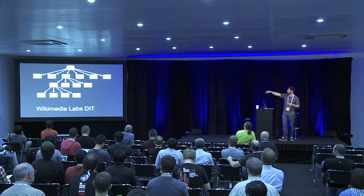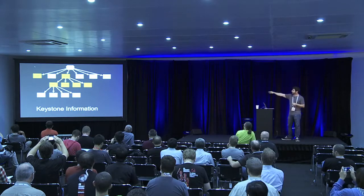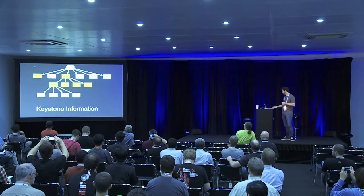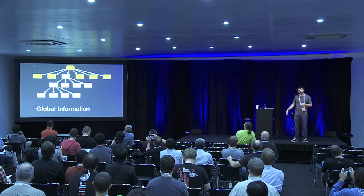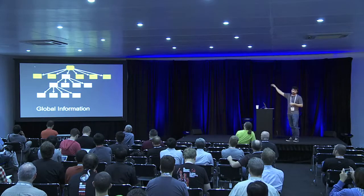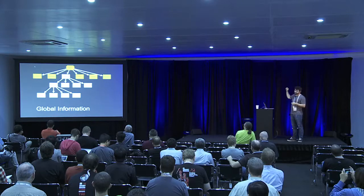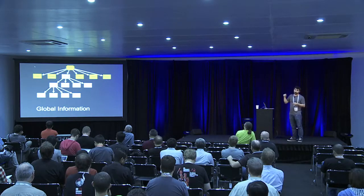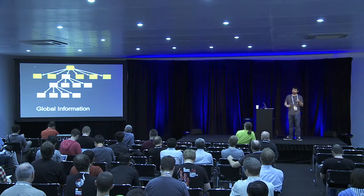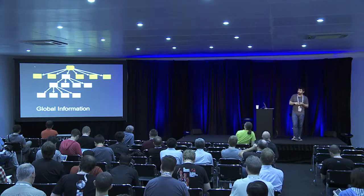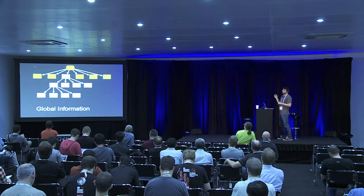This is our directory information tree. In this DIT, we have the Keystone information — that's the users and the projects. We also have a set of global information available to every single instance across every single project: user information, group information, hosts for DNS (which will hopefully move to Designate), and hosts for Puppet as well. We also have global AutoFS information and global sudoers information.